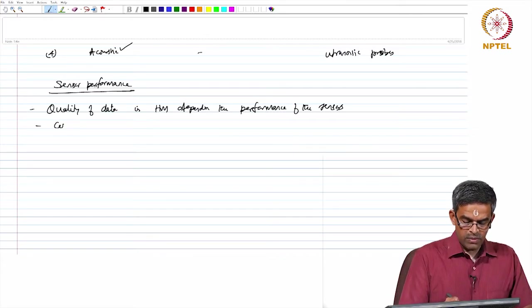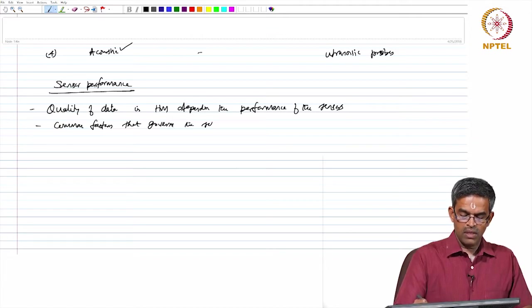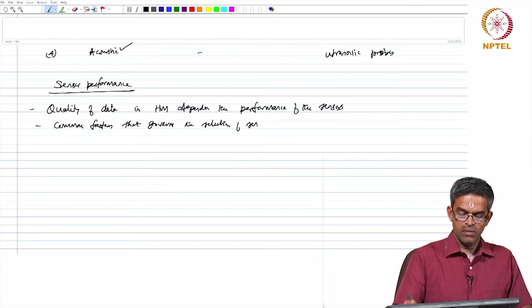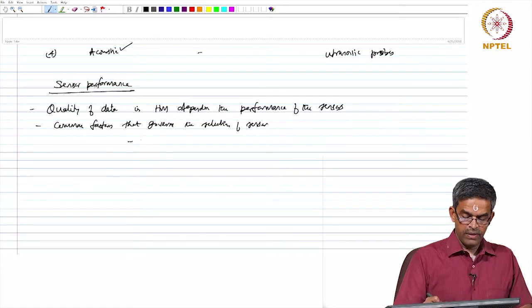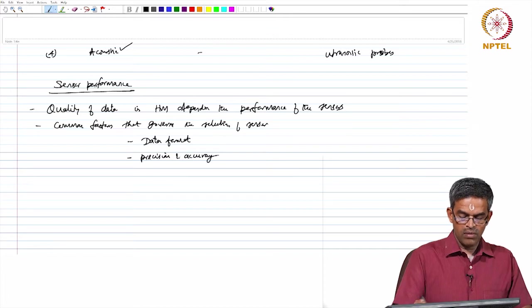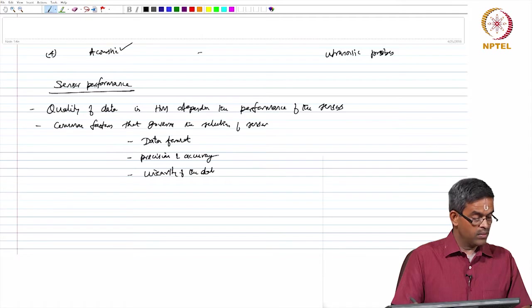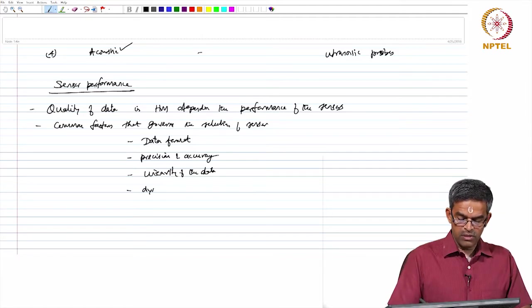Some of the common factors that govern the selection of sensor could be data format, precision and accuracy, linearity of the data, and dynamic range of the variables.